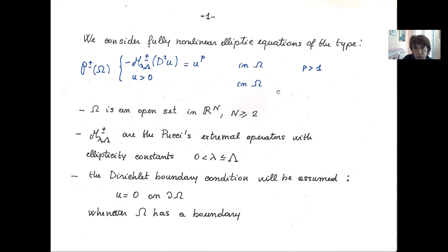This problem will be posed in an open set omega in R^n, with dimension greater or equal than two, but mostly greater than three. Whenever omega has a boundary, we will impose a Dirichlet boundary condition.